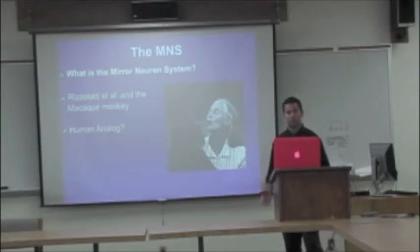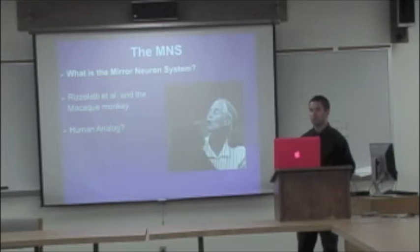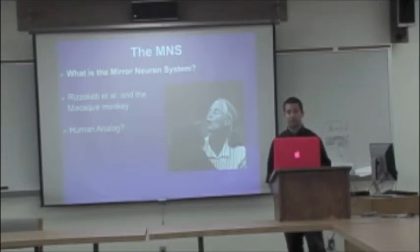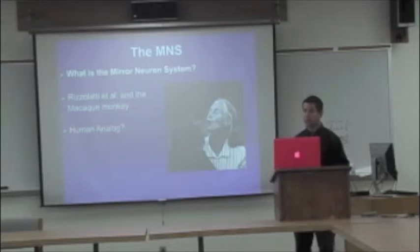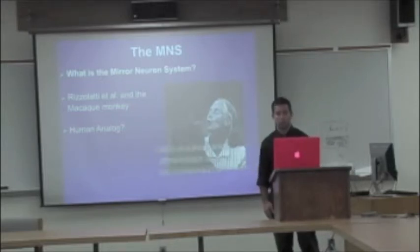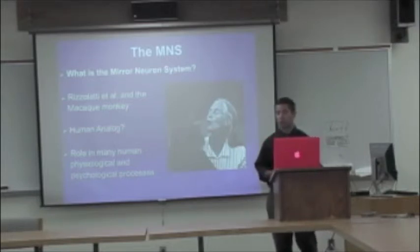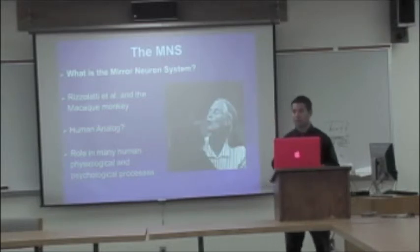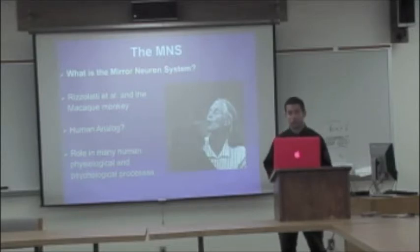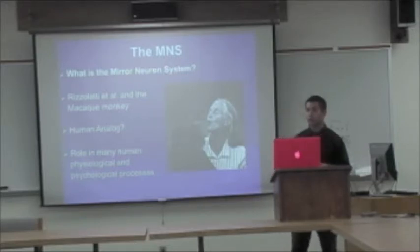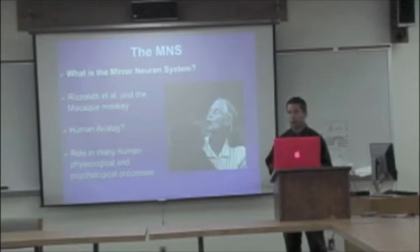Obviously, the next step was: is there a human analog to this system? Is there some type of mirroring system in the human brain? A lot of research has been done in this area as well, and what they have found is a lot of evidence for a mirroring system in the human brain. That system has a role in many human physiological and psychological processes, including action, intention, understanding, facial recognition, and a lot of social aspects as well, including empathy.